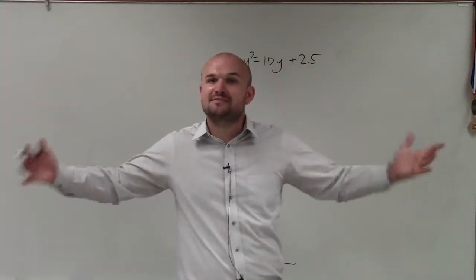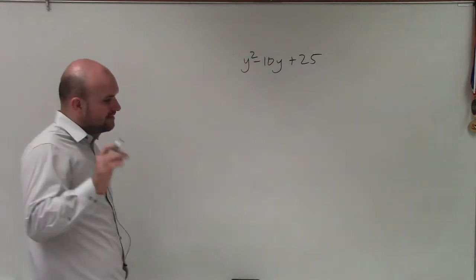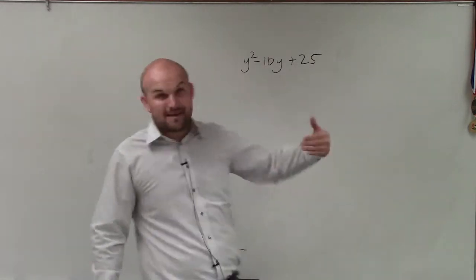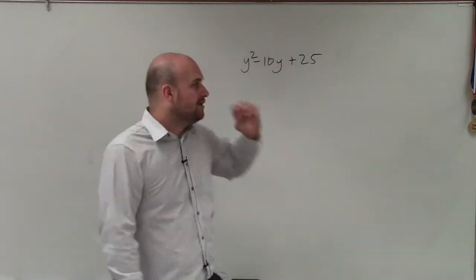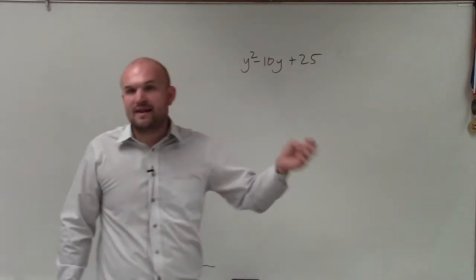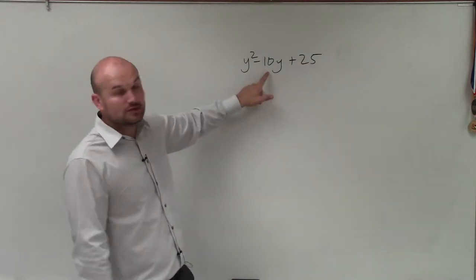Just because that is a square term and that's a square term does not mean it's a perfect square trinomial though. Remember, the middle term has to be 2 times one of that factor. So 2 times 5 is 10. Is our middle term 10? Yes, it's negative 10, but it's still 10.